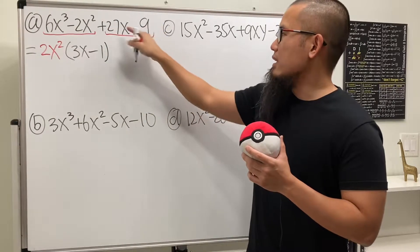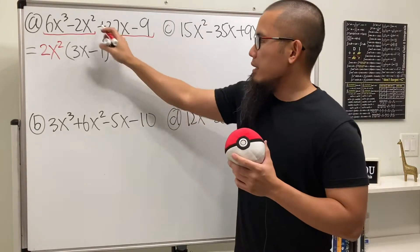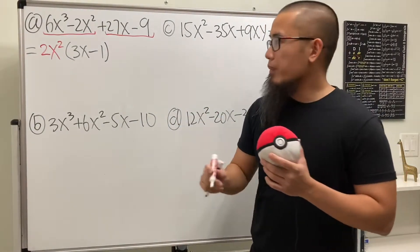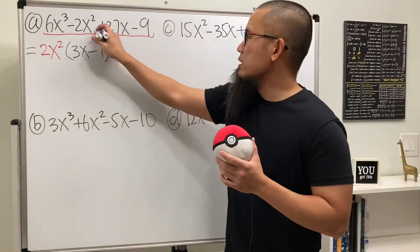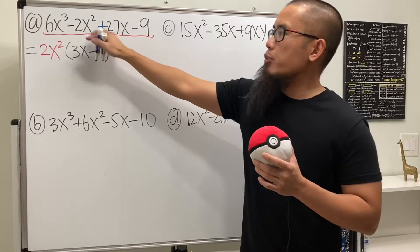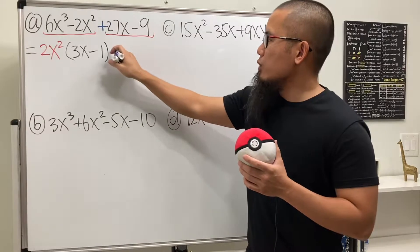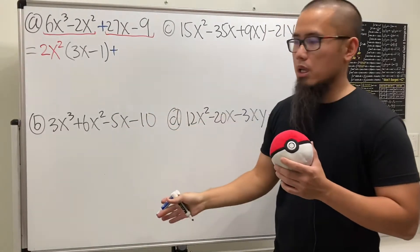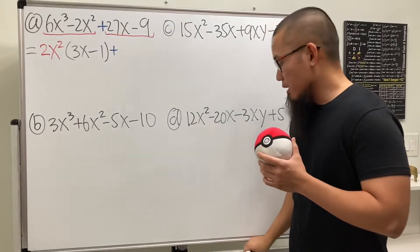Now, 27x minus 9, in terms of number, we can factor out 9. Here's one little thing that you have to remember, though. Whenever we do factor by grouping, especially you see this right here, the operation that separates the first two terms and also the last two terms, you always want to write that down regardless. Just write it down right away. It really matters later on when you deal with some negatives.